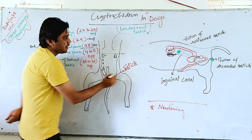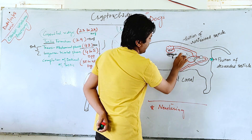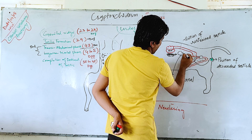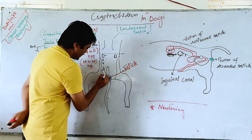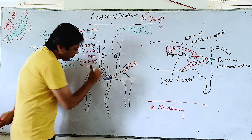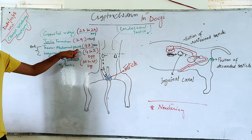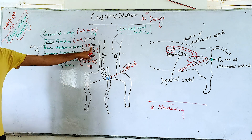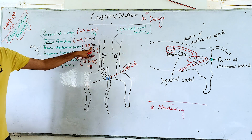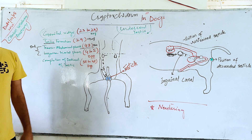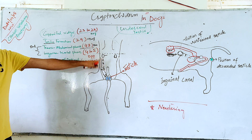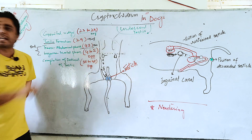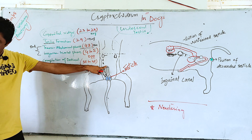The movement from the site of development up to the inguinal canal is known as the transabdominal phase. This starts on day 42 but continues and finishes near the time of birth. In a newborn male puppy you will find the testis not in the scrotum but on top of the inguinal canal.